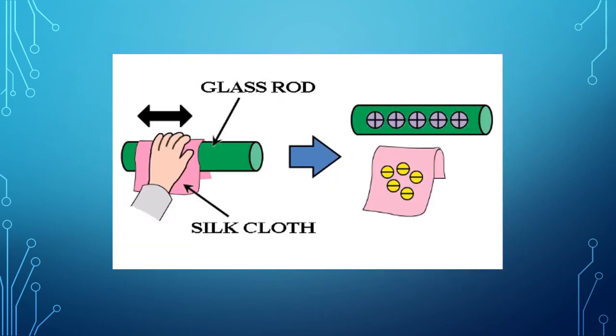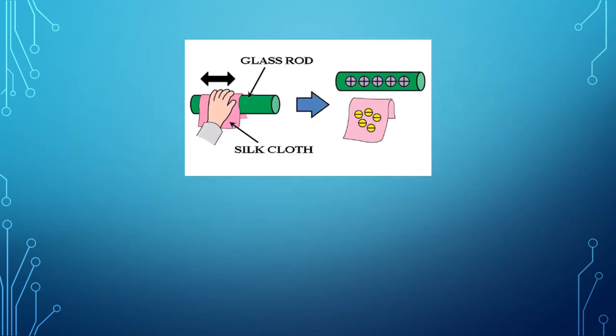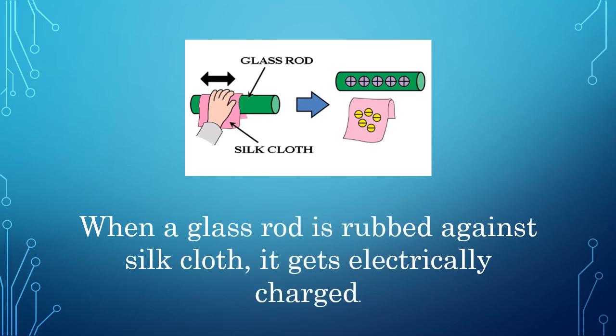What will happen if a glass rod is rubbed on a silk cloth? When a glass rod is rubbed against a silk cloth, it gets electrically charged.